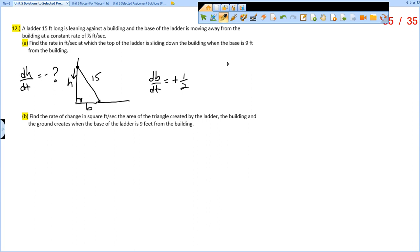So how are these variables related? H squared plus B squared equals 15 squared. You can take your derivative: 2H(dH/dt) plus 2B(dB/dt) equals zero. The derivative of 15 squared is zero.